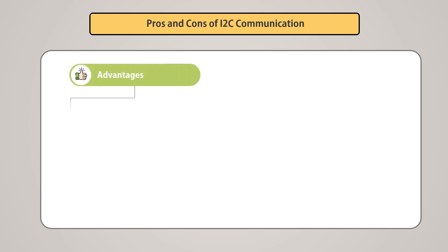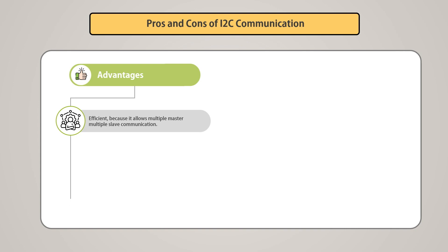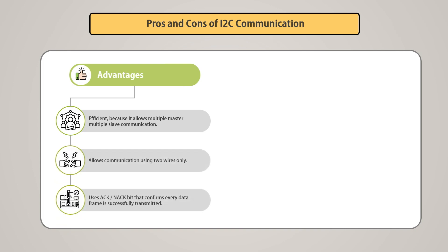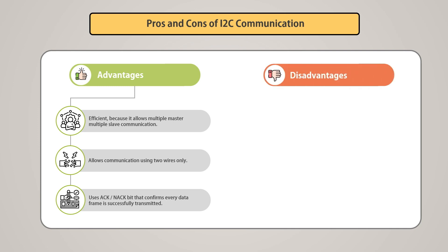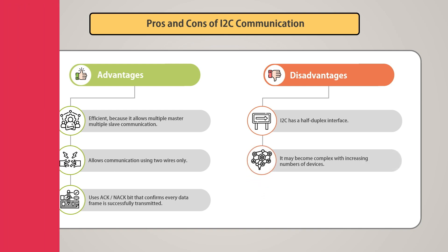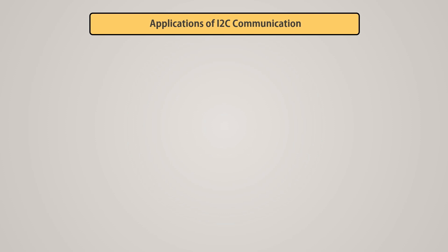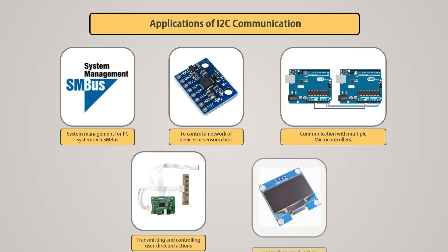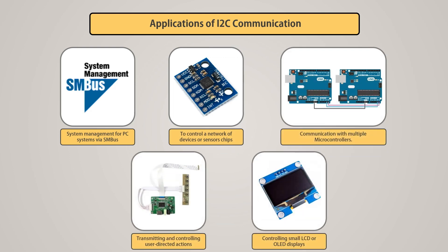The I2C communication protocol has various advantages: it is efficient, allowing multiple master and multiple slave communication using only two wires, and it uses an acknowledgement bit that confirms every data frame is successfully transmitted. Disadvantages include that it is a half-duplex communication interface and has increased complexity with a growing number of devices. Common applications include system management for PC systems via SM bus, controlling networks of sensors or devices with just two I/O pins, communication with multiple microcontrollers, changing display settings such as backlight and contrast in monitors, and controlling small LCD or OLED displays.